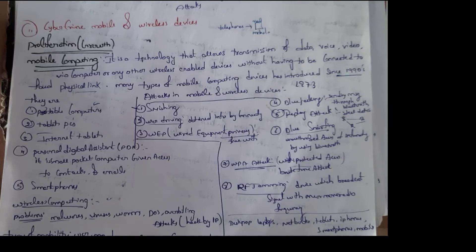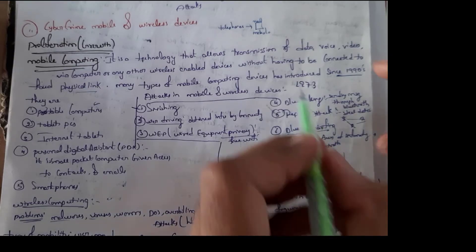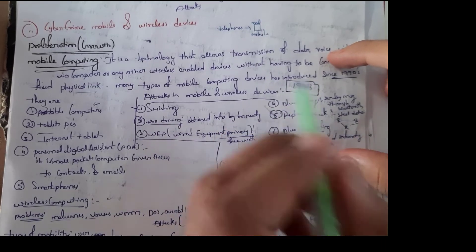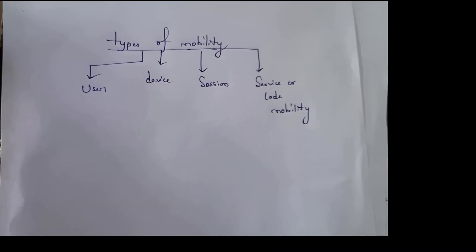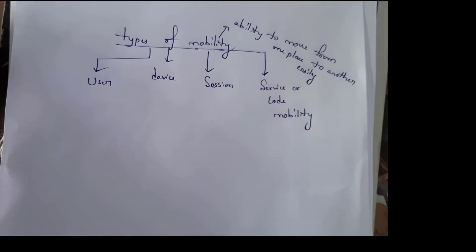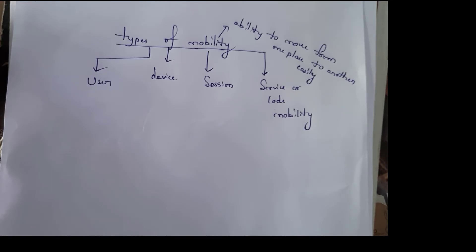Mobile computing was first introduced in the year 1973. Next is types of mobility. The ability to move from one place to another easily is known as mobility. Mobility is classified into four types: user mobility, device mobility, session mobility, and service or code mobility.